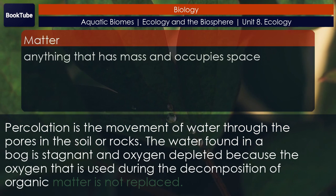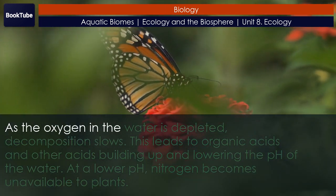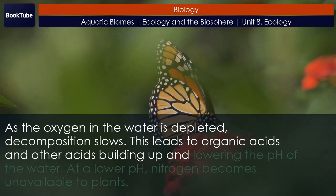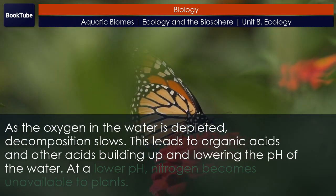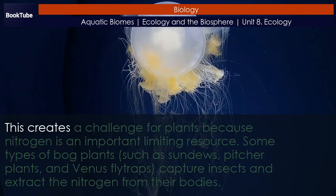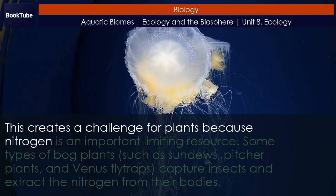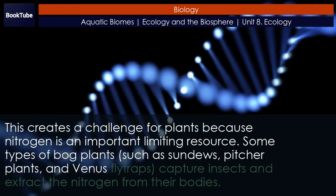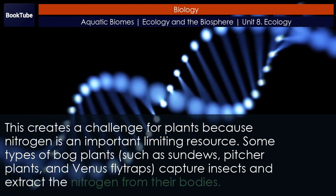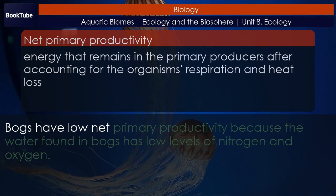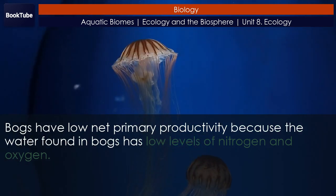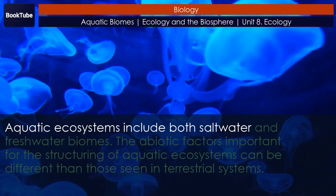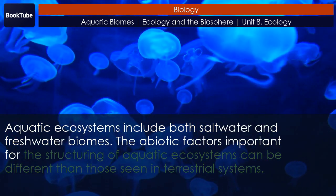The water found in a bog is stagnant and oxygen-depleted because oxygen used during decomposition of organic matter is not replaced. As oxygen in the water is depleted, decomposition slows, leading to organic acids building up and lowering the pH of the water. At a lower pH, nitrogen becomes unavailable to plants — a significant challenge since nitrogen is an important limiting resource. Some types of bog plants, such as sundews, pitcher plants, and Venus flytraps, capture insects and extract nitrogen from their bodies. Bogs have low net primary productivity because the water has low levels of nitrogen and oxygen.